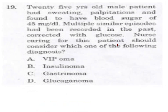Question 19: A 25-year-old male patient had sweating and palpitations and was found to have a blood sugar of 45 mg per dL. Multiple similar episodes had been recorded in the past, corrected with glucose. The nurse caring for this patient should consider which diagnosis?